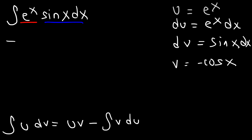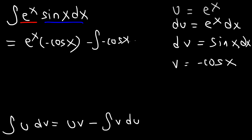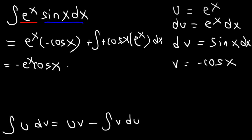Applying the formula, u times v gives us e to the x times negative cosine x, minus the integral of v du, where v is negative cosine x and du is e to the x dx. So we have negative e to the x cosine x, and the two negative signs become positive, plus the integral of e to the x cosine x.